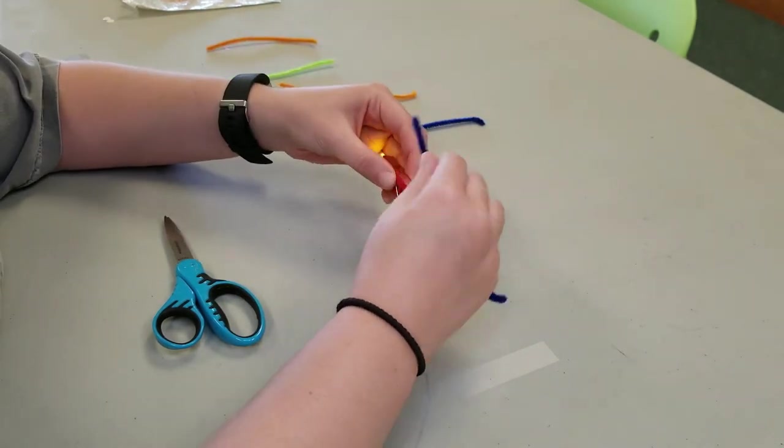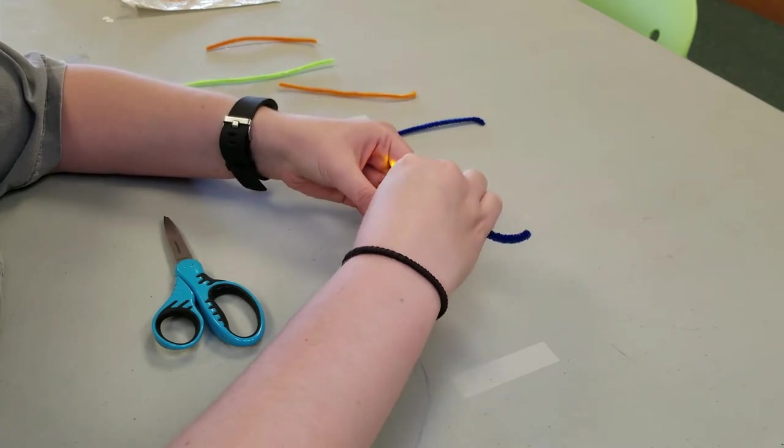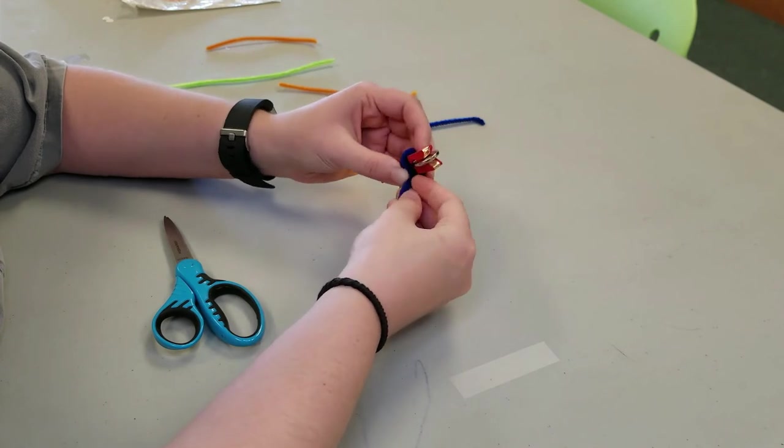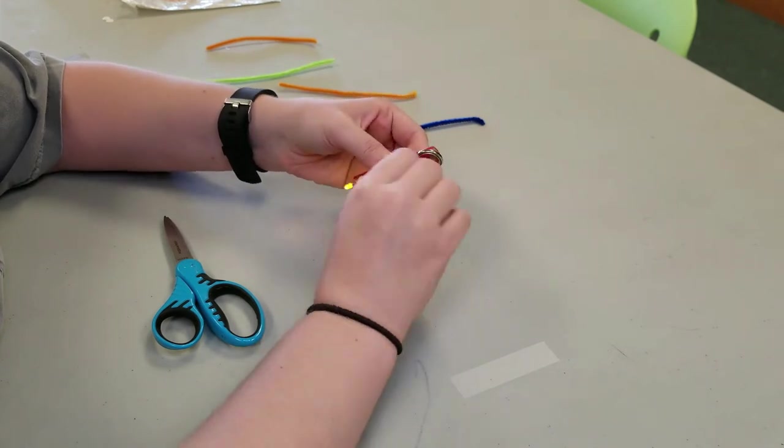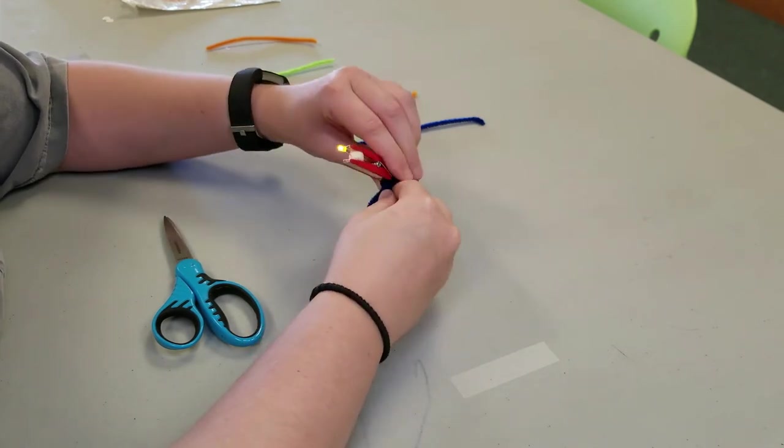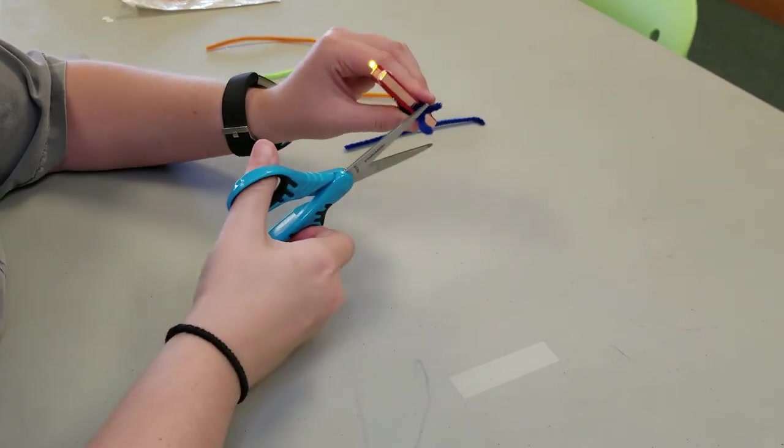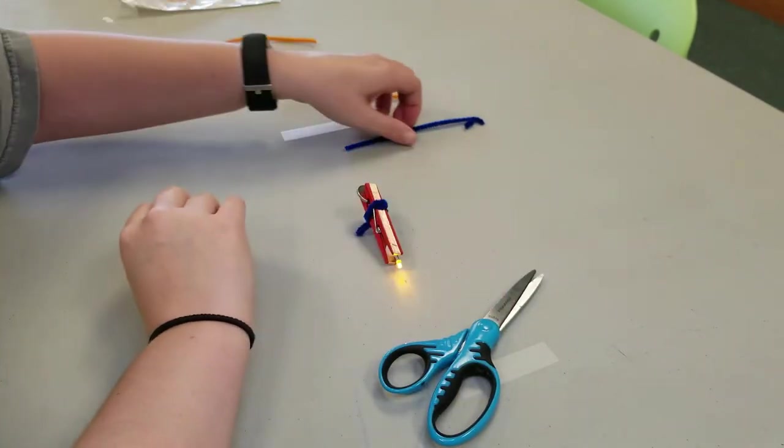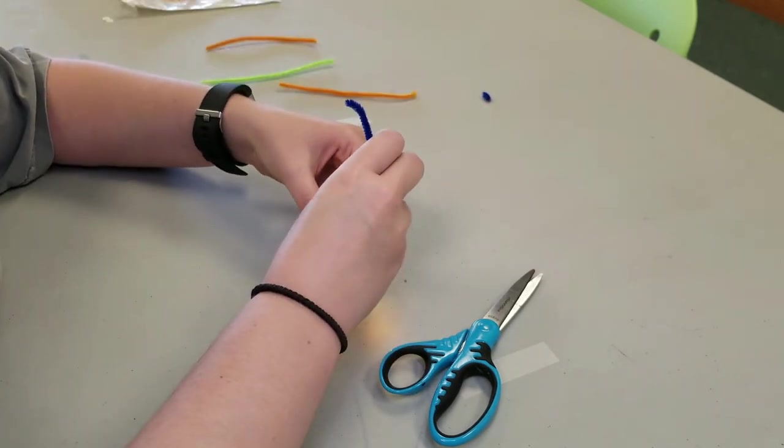We'll wrap the pipe cleaner around the clothespin, and then twist underneath. You may have to trim it if it's uneven. Now you're going to do the same thing for the other set of legs.